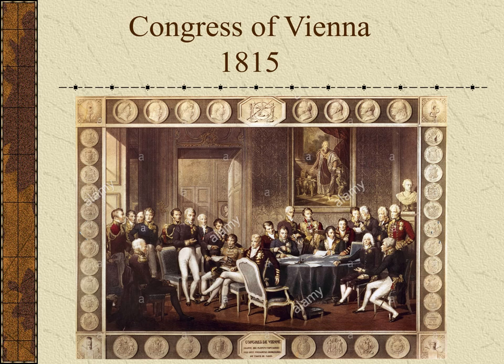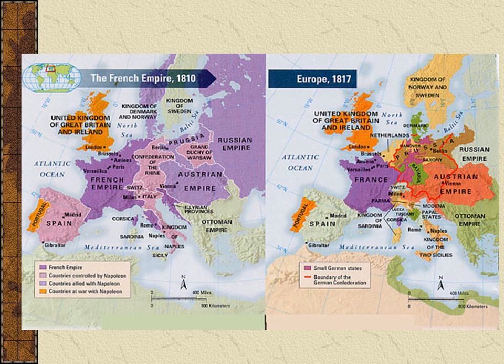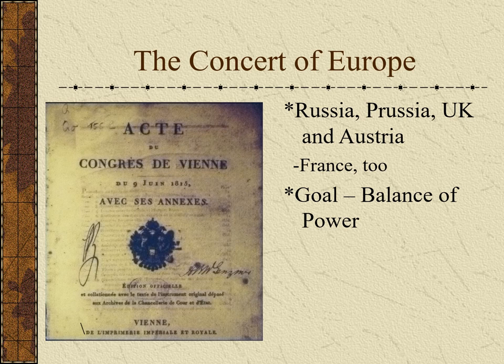Once Napoleon was finally defeated in 1815, the nations of Europe got together at the Congress of Vienna and said they had to do something to make sure that never happened again. So this agreement became known as the Concert of Europe — initially Russia, Prussia (think Germany), the United Kingdom, and Austria. Later France joined as well. The goal was a balance of power — don't let anybody get too powerful. If Russia starts to get too powerful, the other members will control Russia.